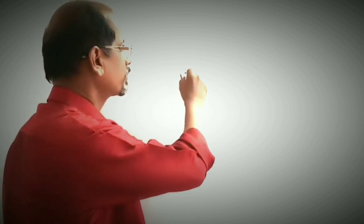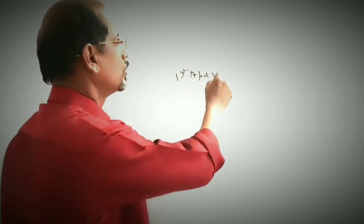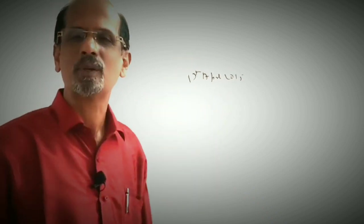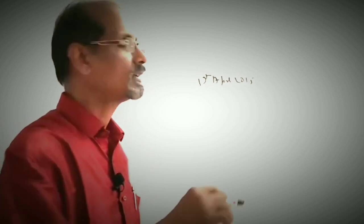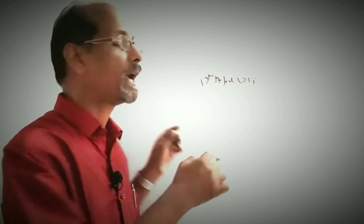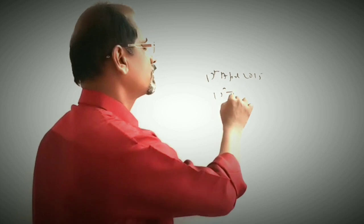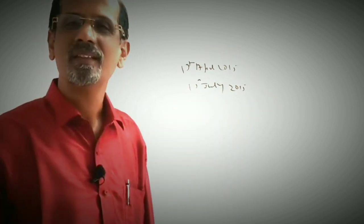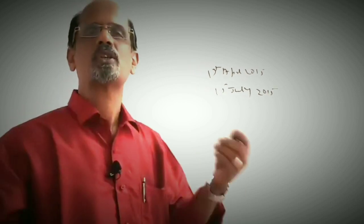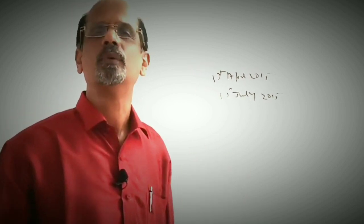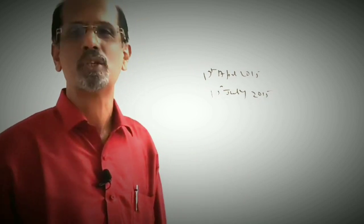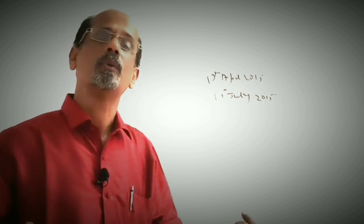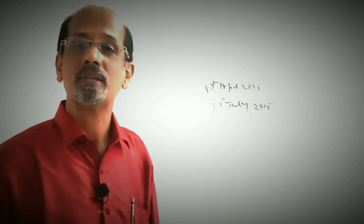Suppose the financial year of the business started on 1st April 2015, and a fire breaks out on 1st July 2015. A part of the stock is destroyed and you will have to submit a claim to the insurance company. So how will you submit that claim?